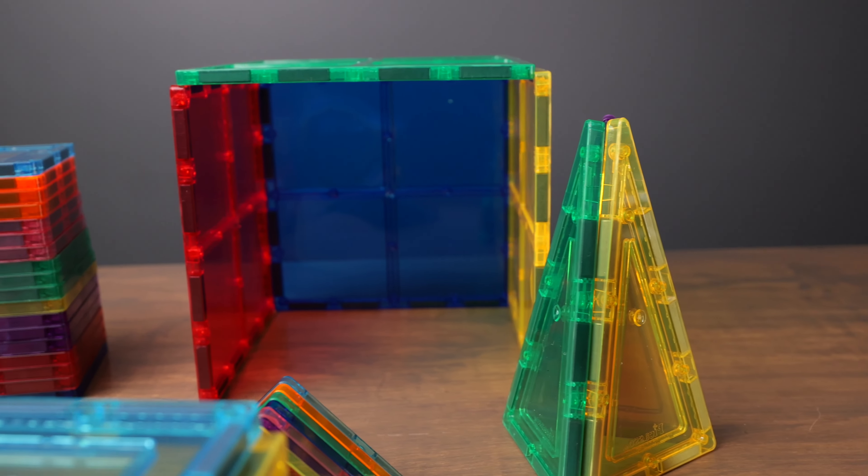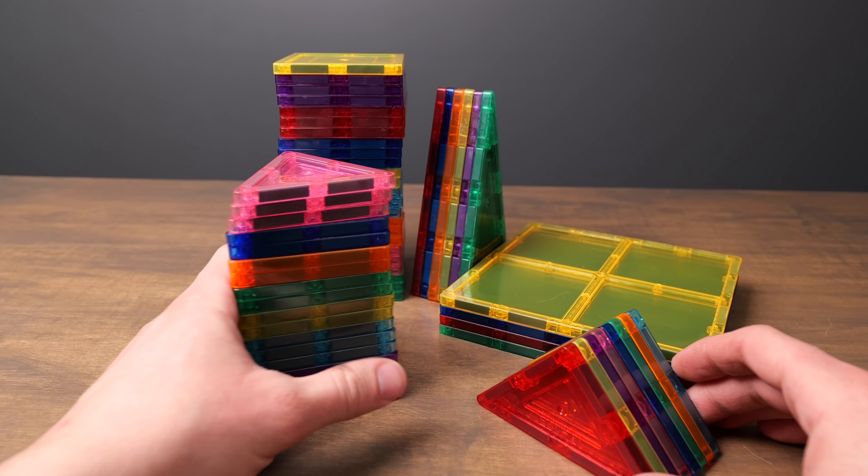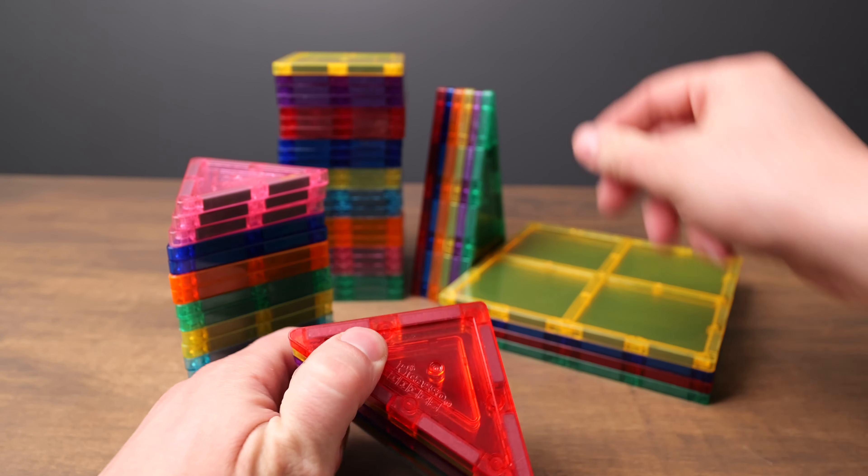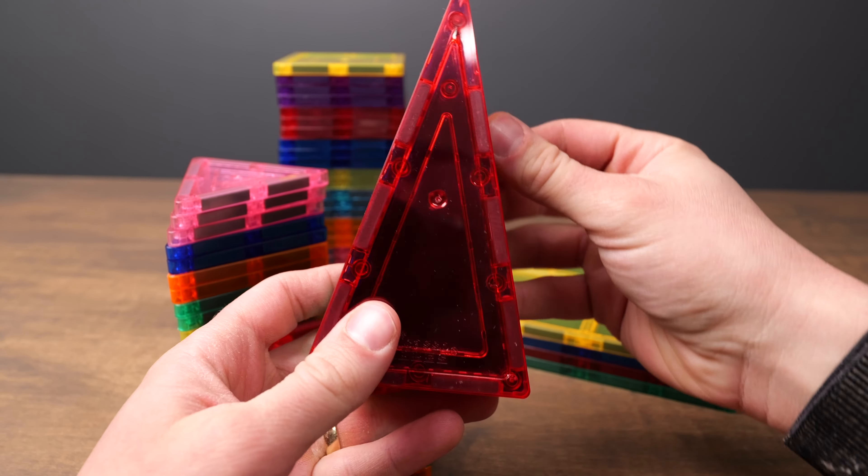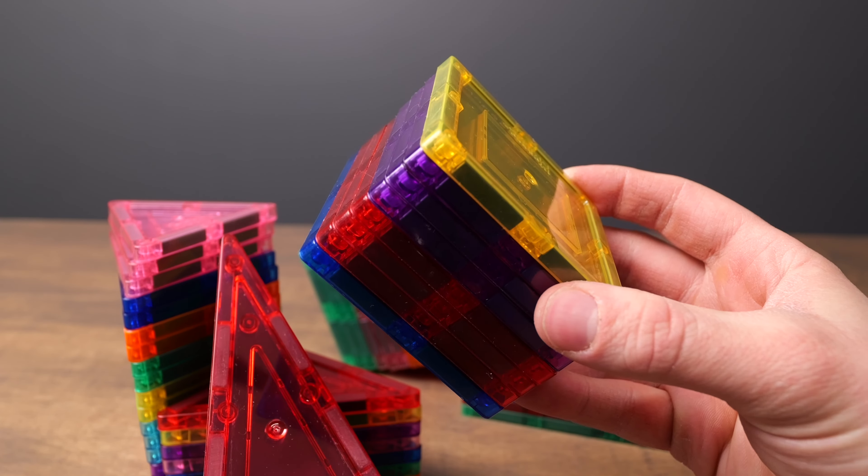I just love all the unlimited possibilities that the Picasso Tiles give you. You get five different types of shapes. You get the small triangles, the medium-sized triangles, and you also get the large triangles too. And then there's these big squares, and you also get the small squares.